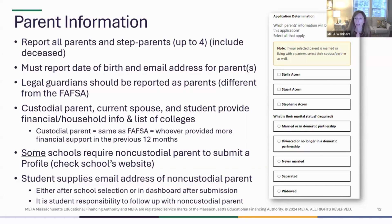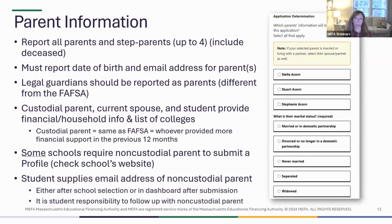So in that case, mom and her current spouse — let's say she's remarried to a stepdad — along with the student are going to fill out the profile. The dad and stepmom are still going to be listed by name on the profile, but really the custodial parent, mom, her current spouse, the stepdad, and the student are the ones who fill out the profile.